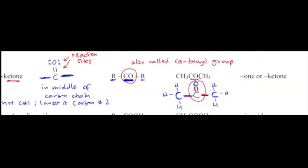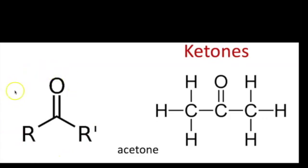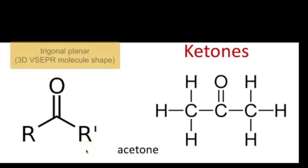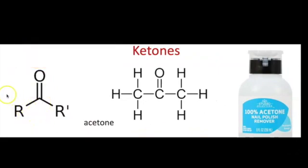The ketone functional group in an organic molecule has the name ending -ONE. The ketone functional group is similar to aldehydes and has the trigonal planar geometry, with the central carbon having three bonds. The carbon has to be in the middle of the hydrocarbon chain, and the rest of the molecule extends outward. It can be right in the middle or just anywhere as long as it's not carbon number one. The simplest ketone is acetone, which has one carbon on either side and carries the name ending -ONE.